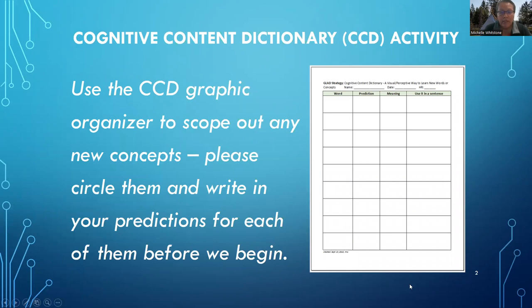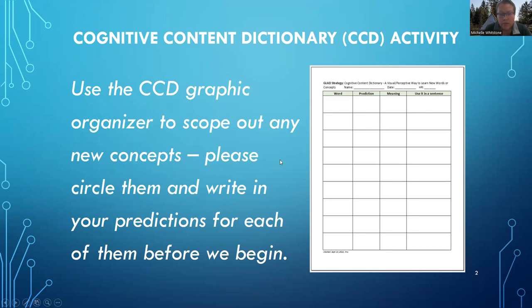Before we begin, I would like us to use the Cognitive Content Dictionary activity. The Cognitive Content Dictionary is a visual and perceptive way to learn new words or concepts. It applies to everyone and it's always nice to have something on hand to record learning, to begin writing, to put pencil to paper, and to instigate prior knowledge. I've already created a few pages with some concepts, phrases, and words. Go through those pages and circle the ones that are new or that you have never heard of before, and write your predictions for what they might mean. It's about five minutes — you can pause the video to fill that part out before we continue.